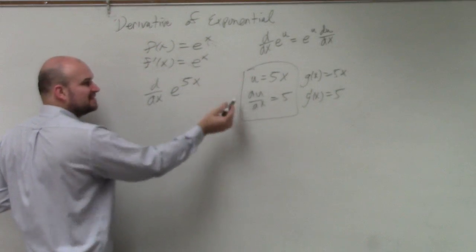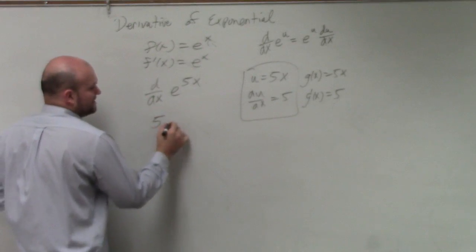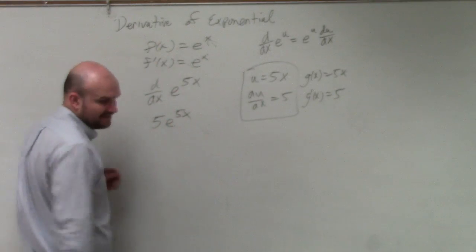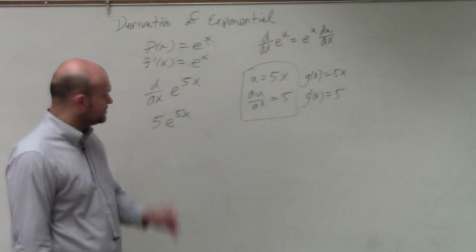And then multiply it times the derivative of your inside function, which is 5. So therefore, you'd have 5 times e to the 5x as your derivative.